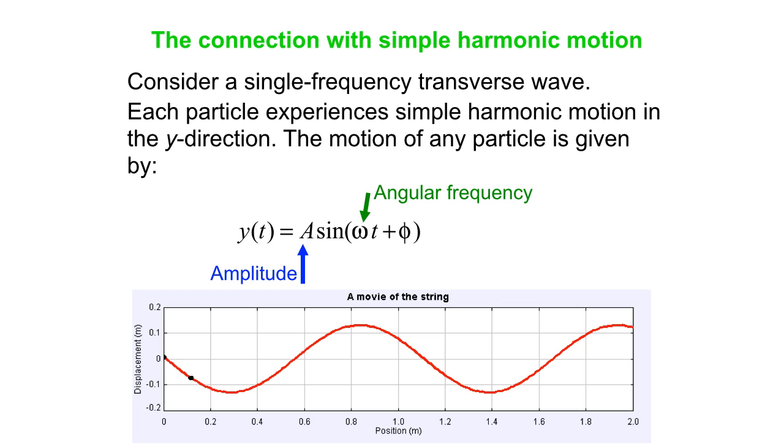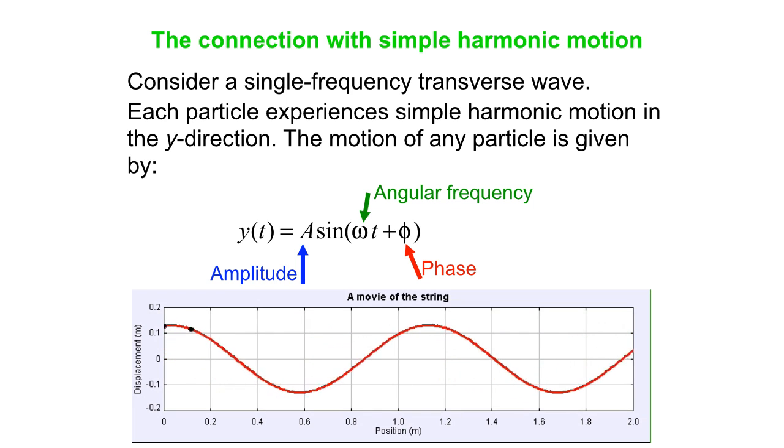ω being the angular frequency, and then we have this thing, the phase, and that's the thing that really varies from one point to another. You can see there's two particles that have been colored in, one at the very left-hand side, one a little bit to the right of that, and they're doing exactly the same thing as one another, just one is delayed with respect to the other. It's the phase part of the equation that determines that delay. The more to the right you are, the more that lag in what one particle does compared to the other.